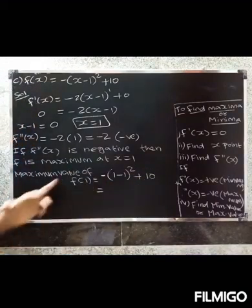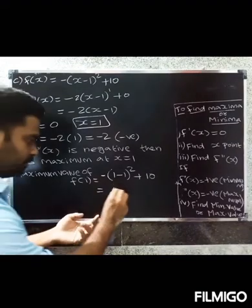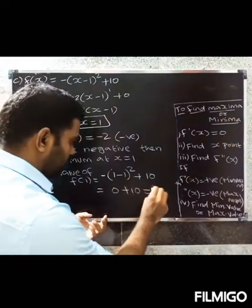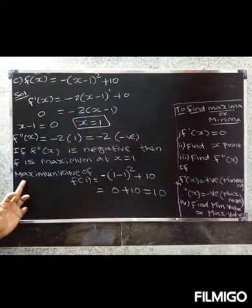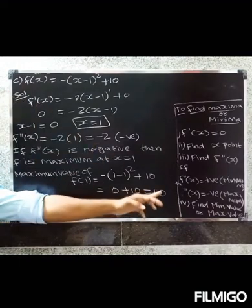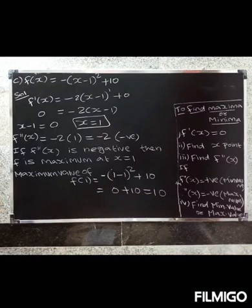f(1) = -(1 - 1)² + 10 = -(0)² + 10 = 0 + 10 = 10. So the maximum value of f(x) is 10.